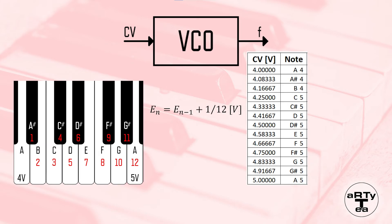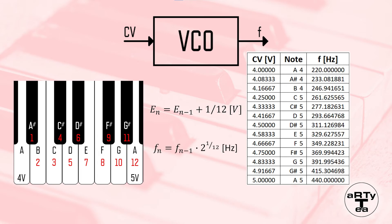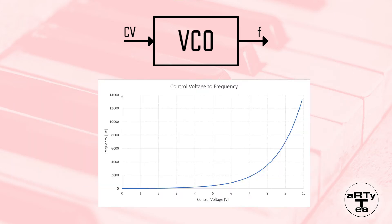The volt per octave is a linear scale. However, the corresponding frequencies are not linear — the frequency will double for each raise of an octave. For instance, the frequency represented by 5 volts, let's say that is an A at 440 Hz, is double the frequency represented by 4 volts, which would be an A at 220 Hz. Hence, the frequency of every semitone is 2 to the power of 1 twelfth times higher than its predecessor, which means that the frequency follows a logarithmic scale. Bottom line is, our voltage-controlled oscillator must be able to convert the linear control voltage into a logarithmic frequency response.